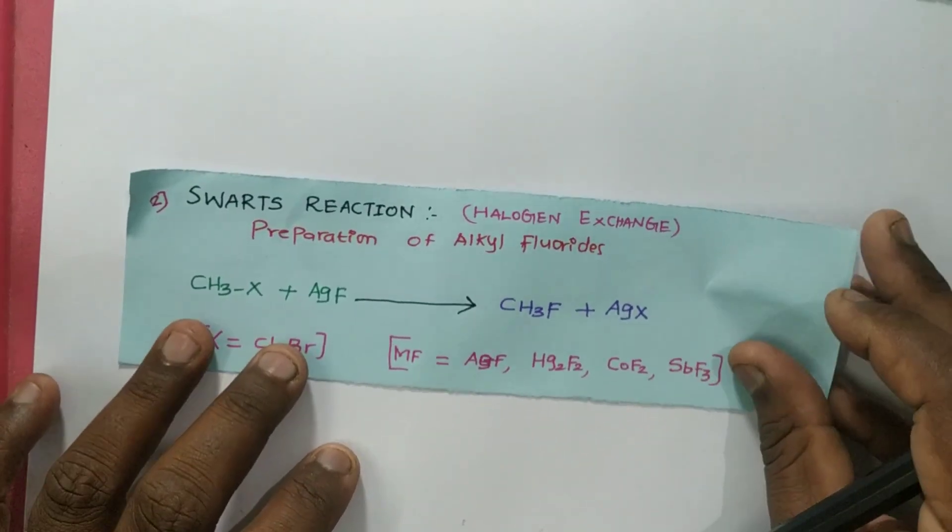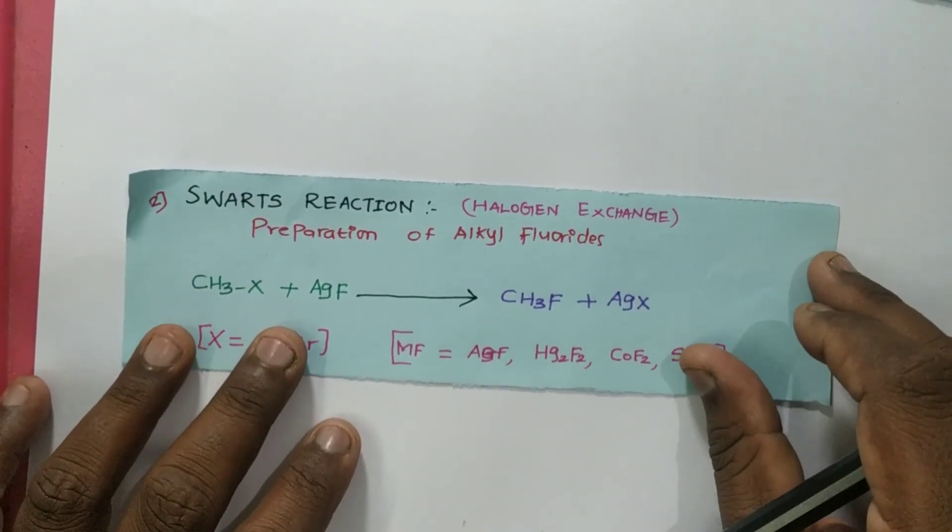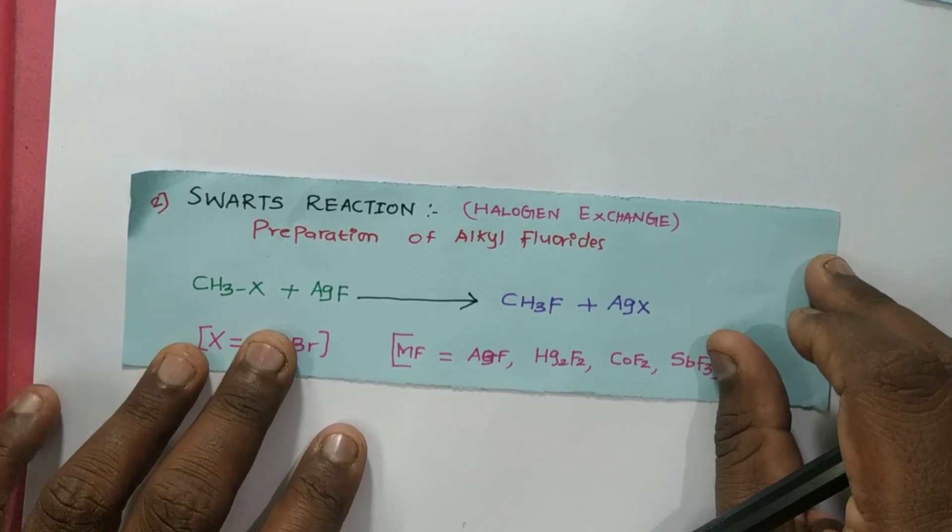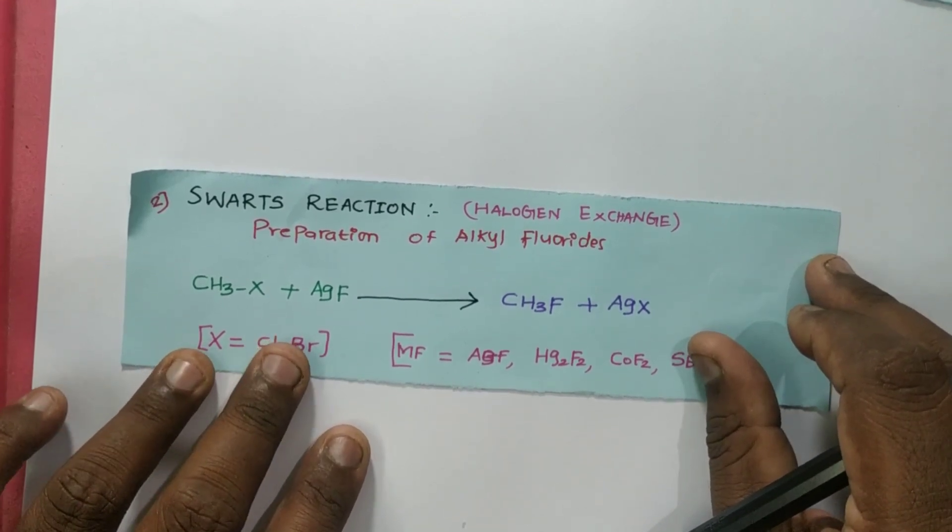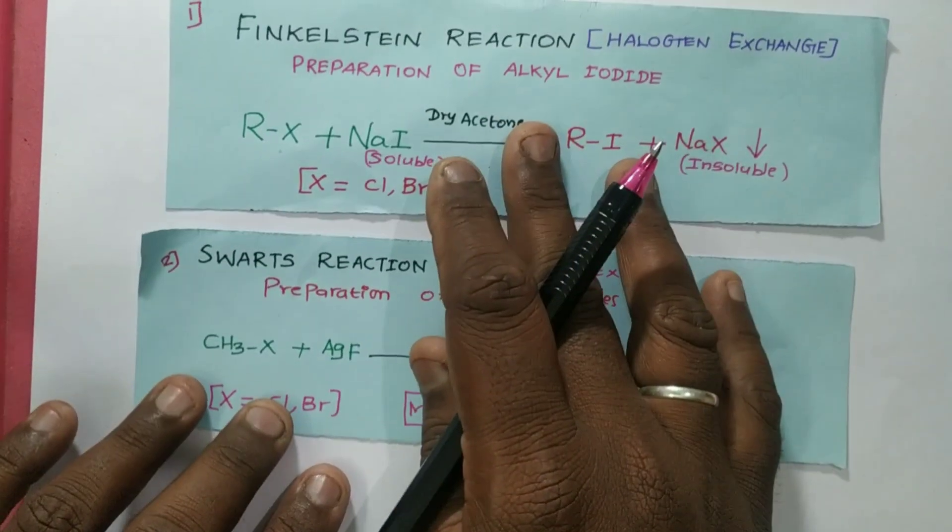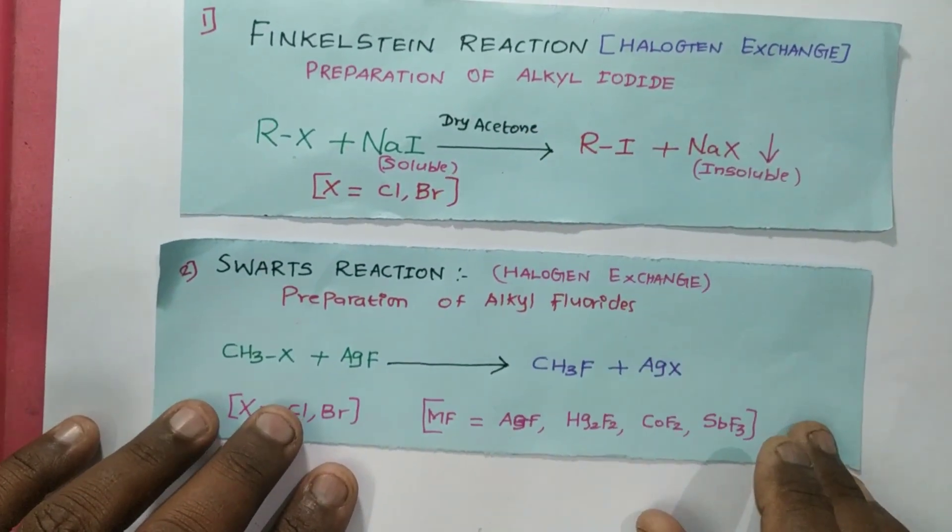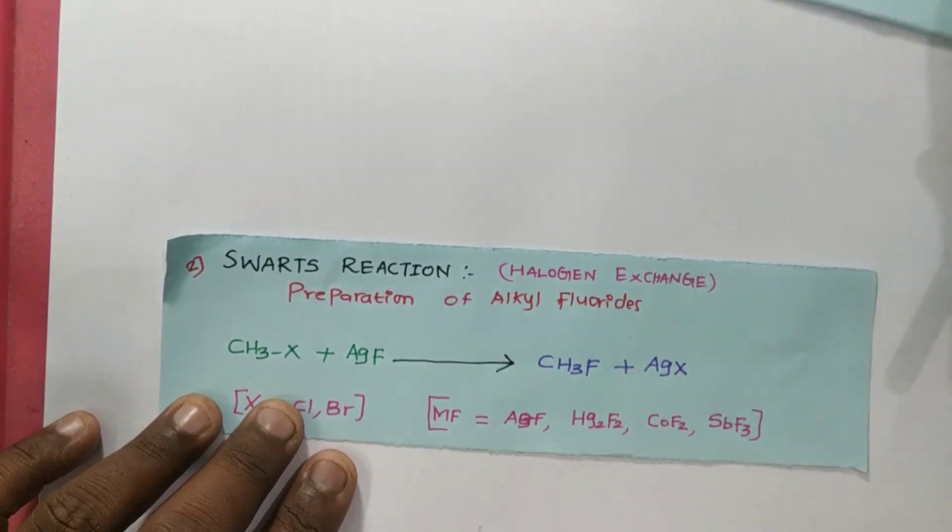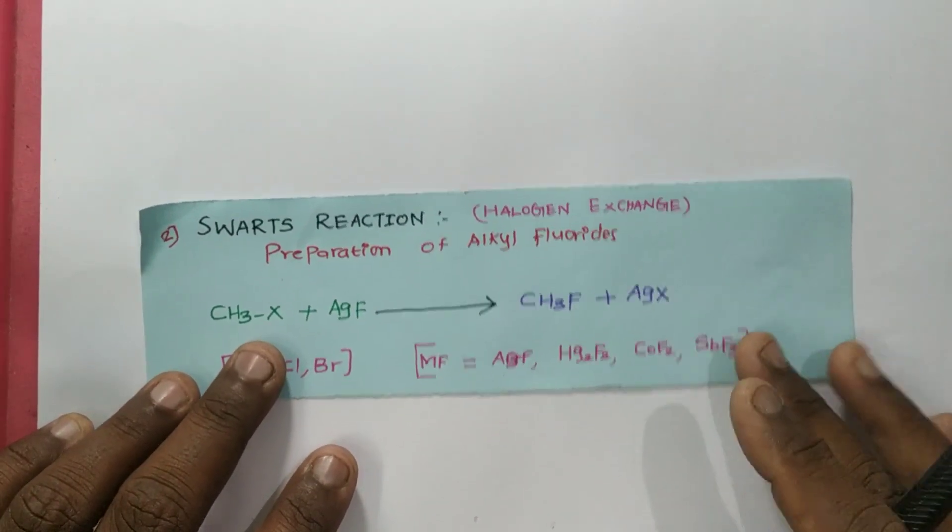Next reaction is the Swarts reaction. Swarts reaction is also a kind of halogen exchange, but here it's for the preparation of alkyl fluoride. In the last reaction, we talked about preparation of alkyl iodide. Now we are going to talk about preparation of fluorides.